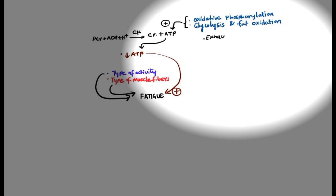The ATP is used for force generation in the muscles. Exhaustion of the stores — mainly glucose, glycogen, fat, or triglycerides — or decreasing the oxygen supply to demanding muscles decreases ATP production by reducing pathways like oxidative phosphorylation, glycolysis, or fat oxidation.